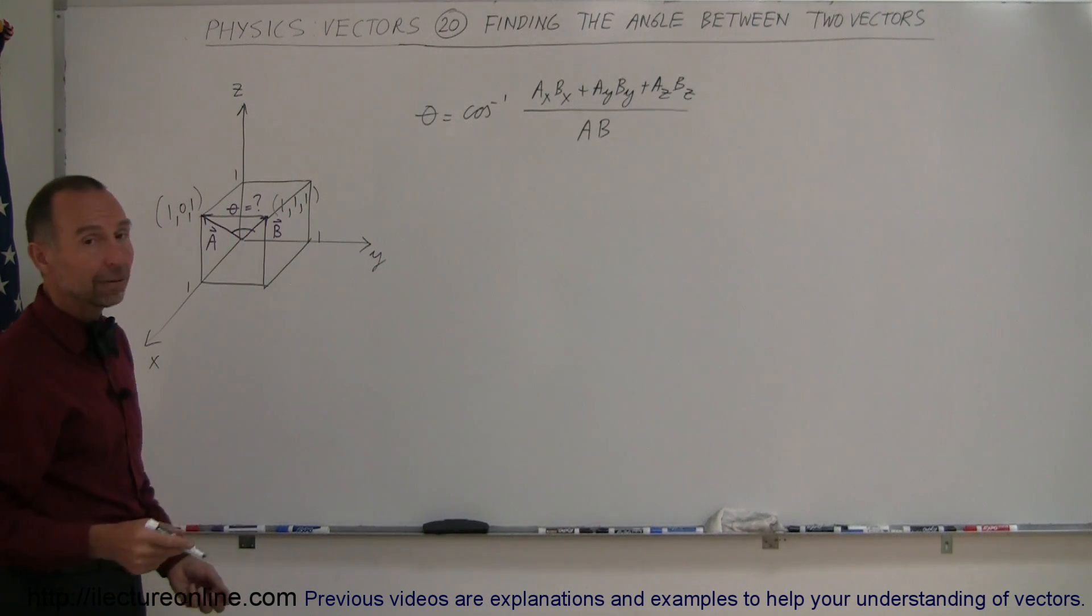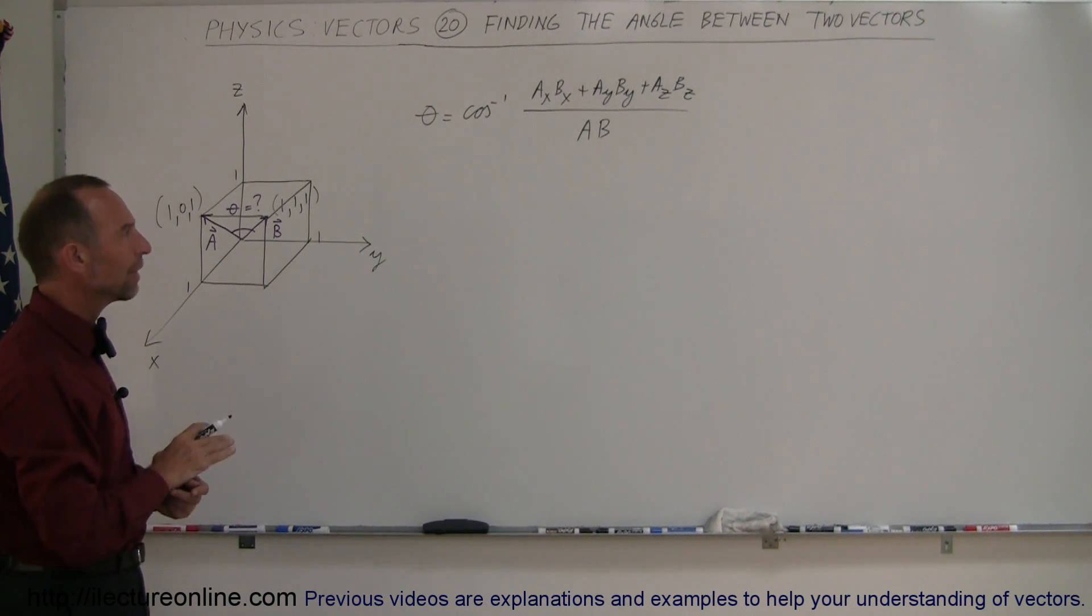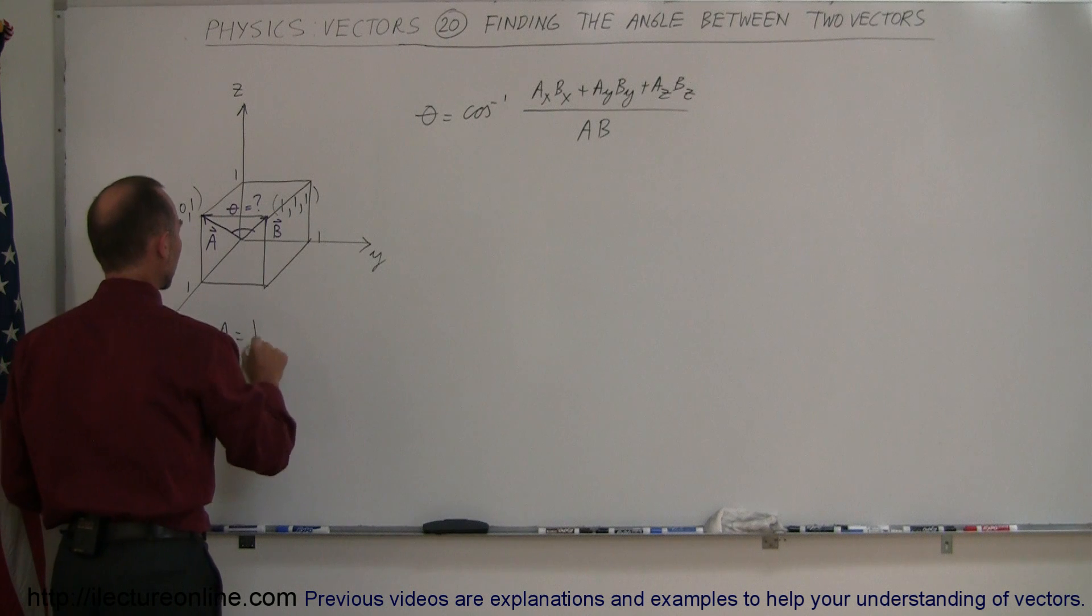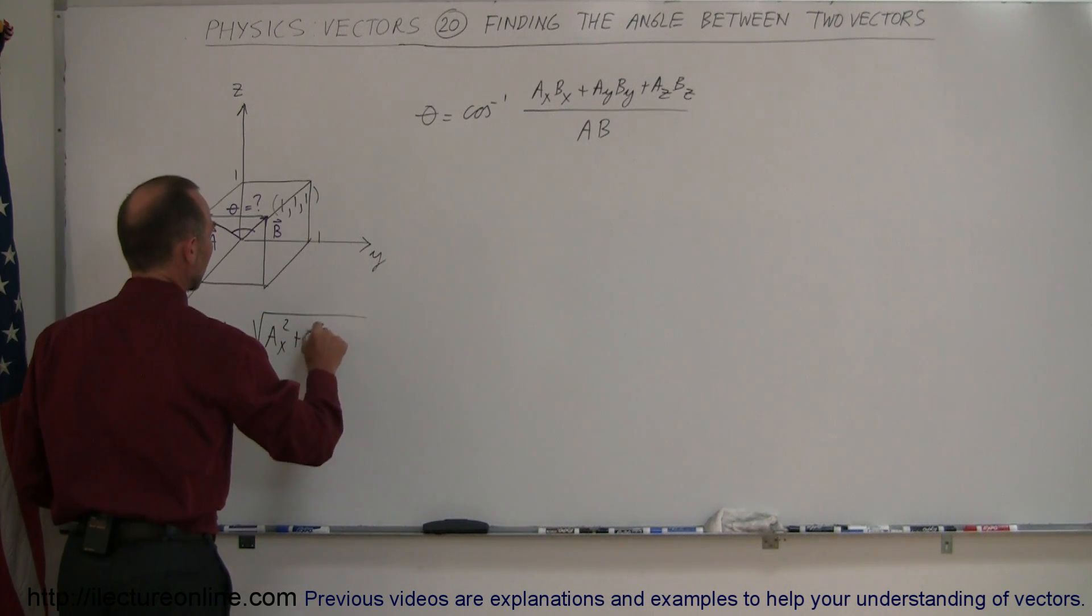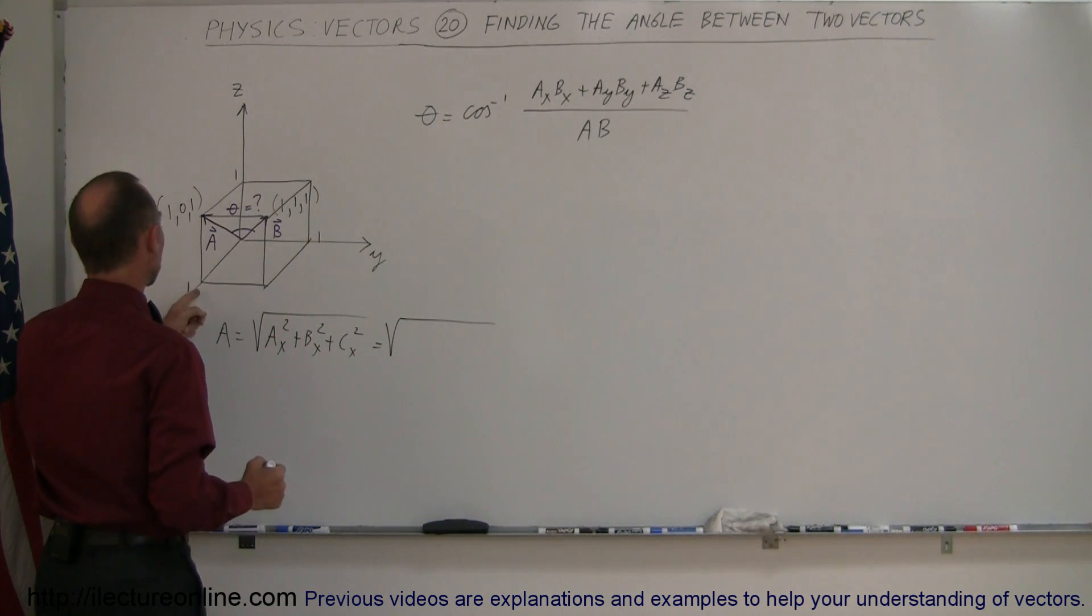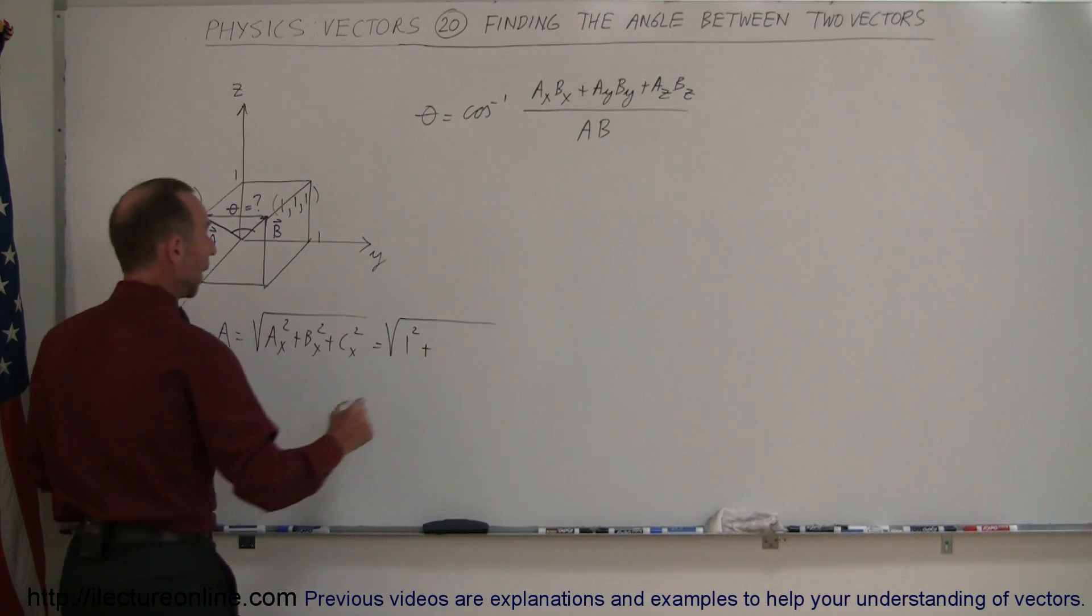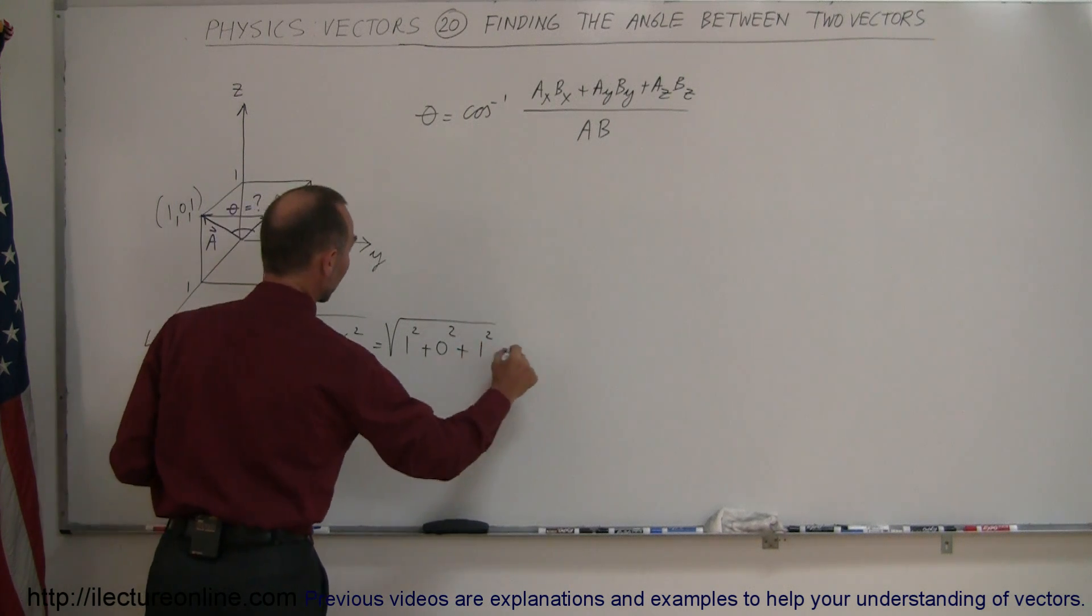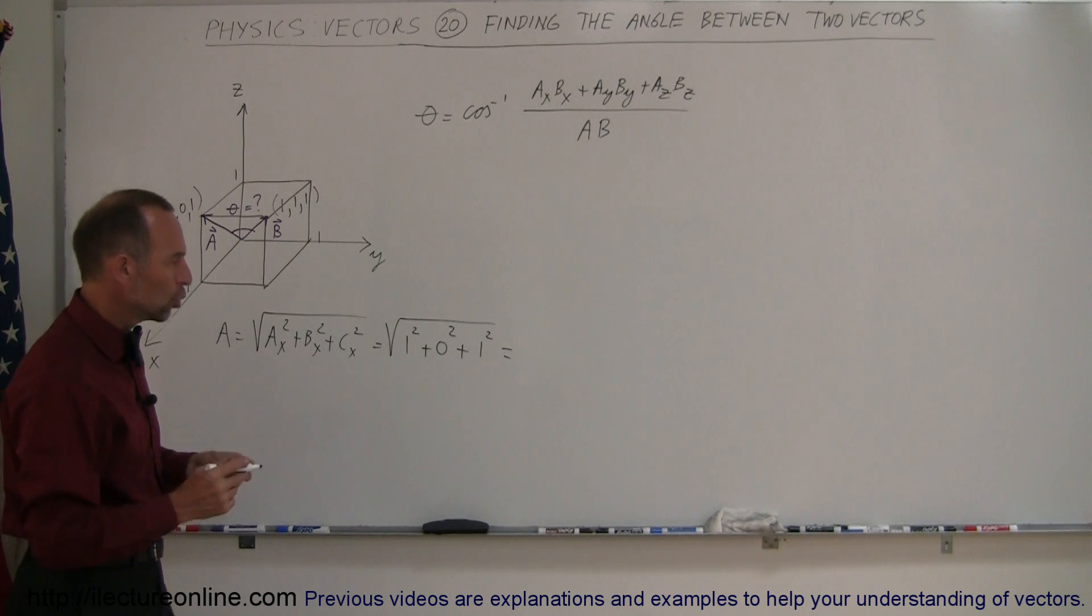Before we can do that, we need to find the magnitude of A and the magnitude of B. The magnitude of A is equal to the square root of A_x squared plus A_y squared plus A_z squared. We have an x component which is 1, so 1 squared plus we do not have a y component, 0 squared, plus we do have a z component, 1 squared. So that's the square root of 2.